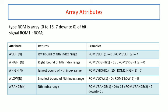a'high(n) returns the largest bound of the given segment — for the first segment it is 15 and for the second it is 7. a'low(n) returns the smallest bound — in case of 0 to 15 the value is 0, and in case of 7 down to 0 the value is also 0, so in both cases the value is 0. a'range(n) returns the range of the first segment as 0 to 15 and the second segment as 7 down to 0. In this way one can return the values of array attributes.